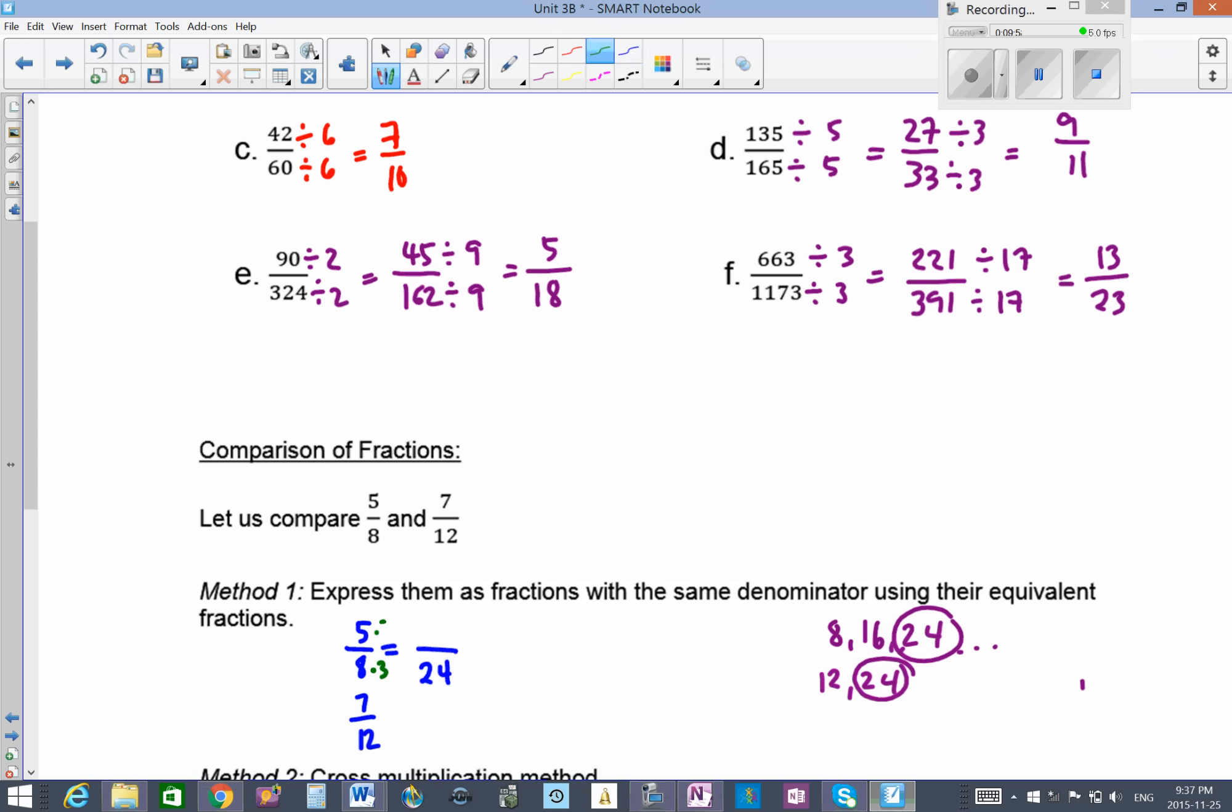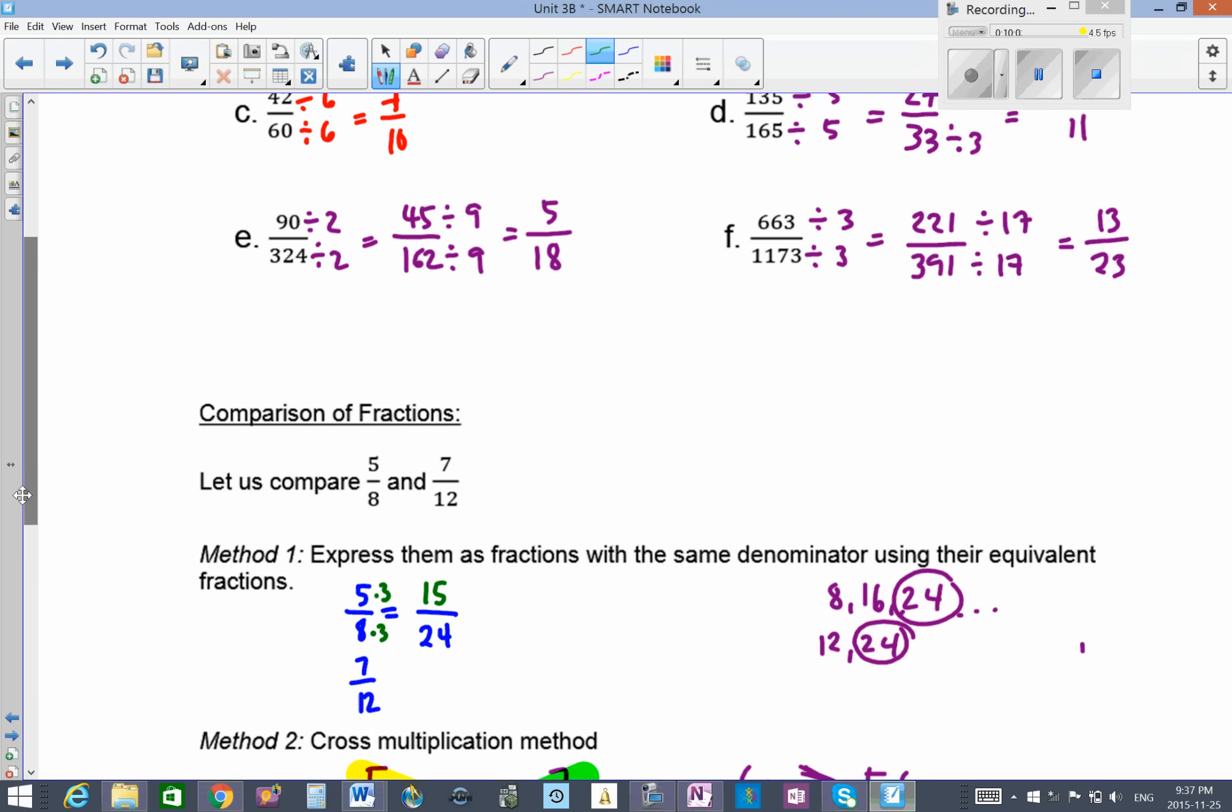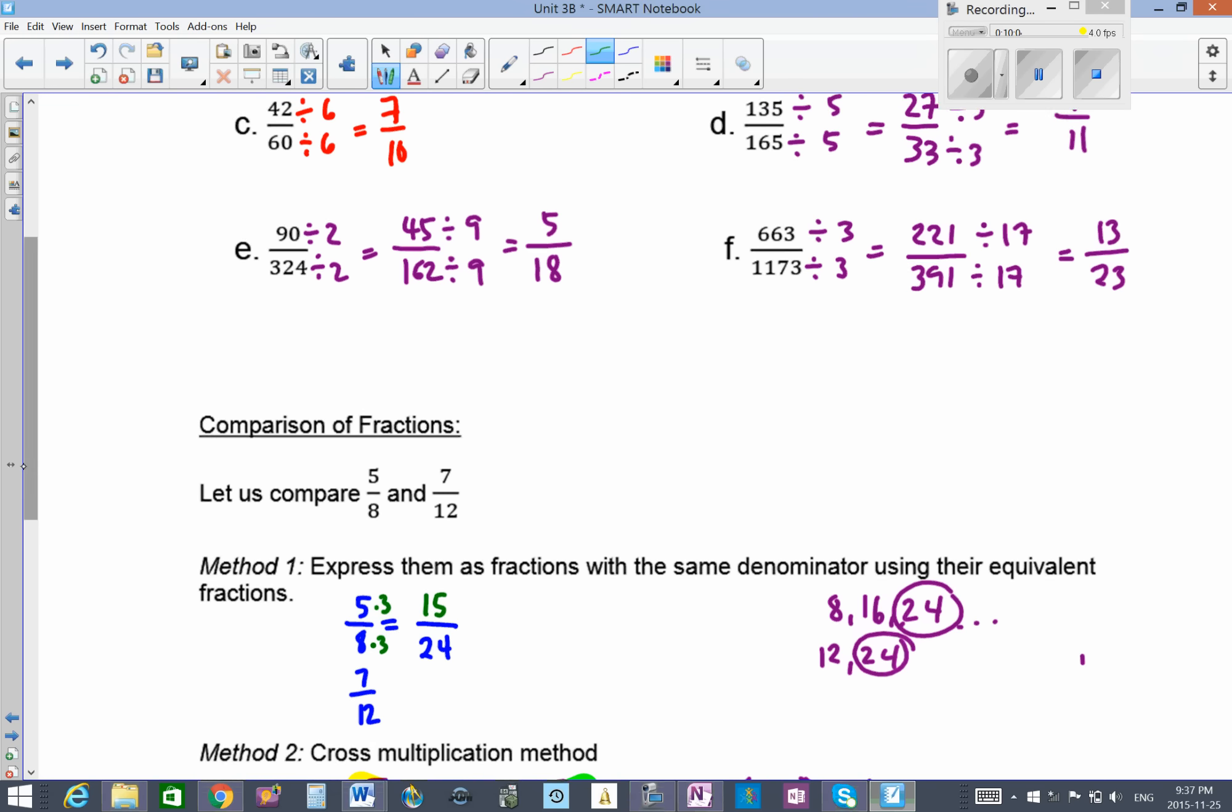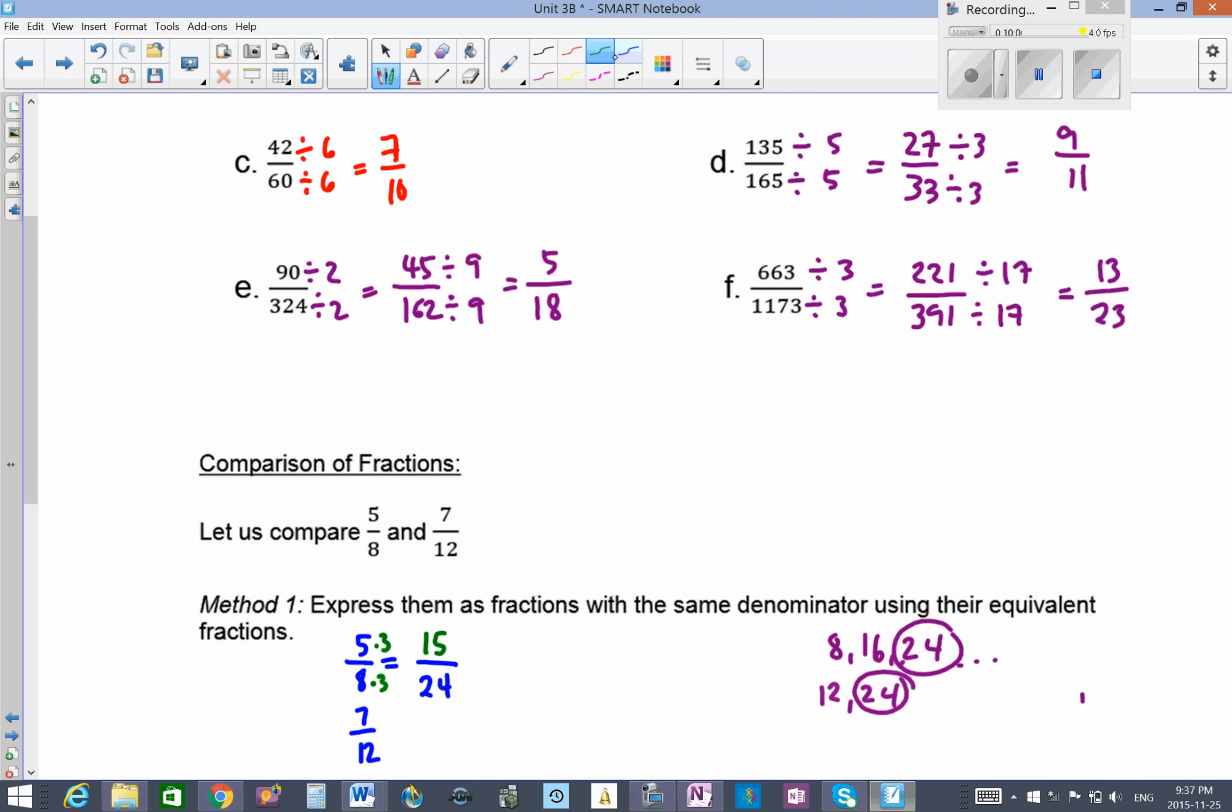And then the other one would be times 2. So this should be 14 over 24. We say that 5 over 8 is bigger than 7 over 12, or 7 over 12 is smaller than 5 over 8.